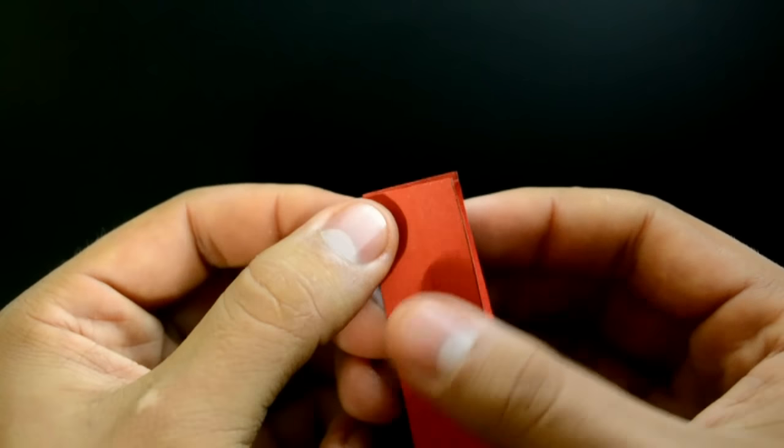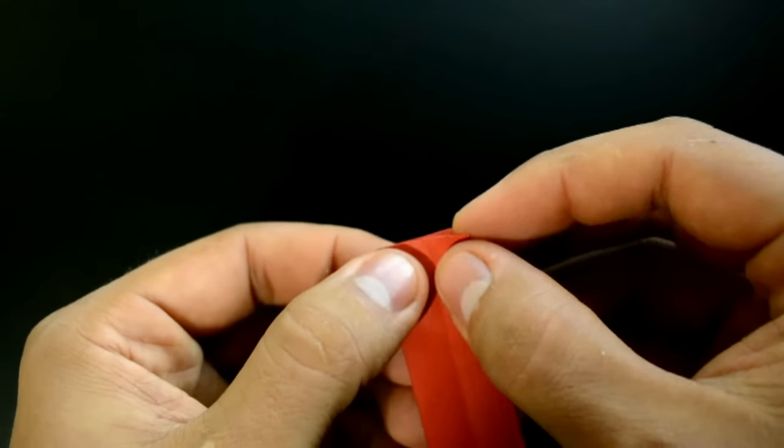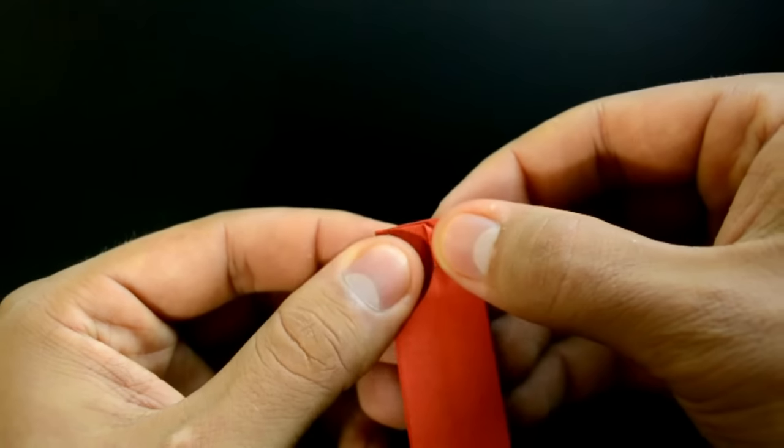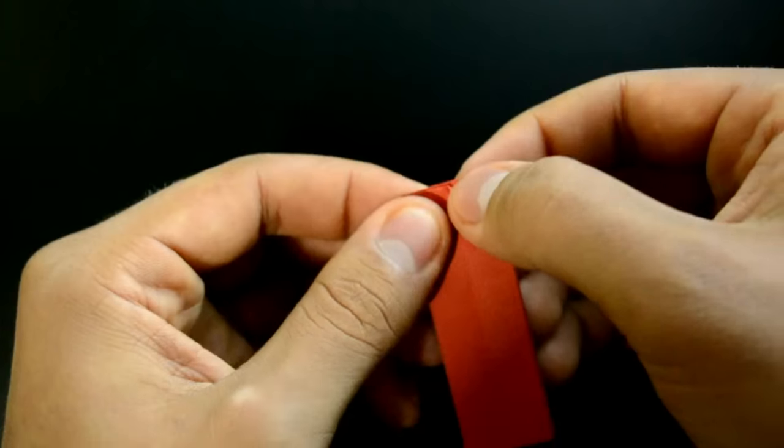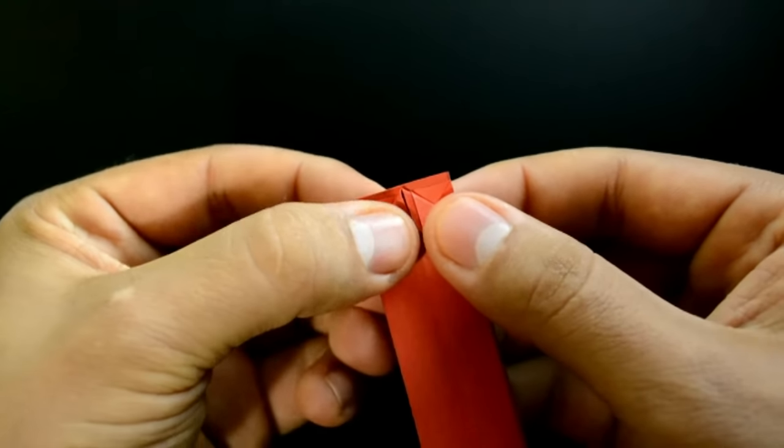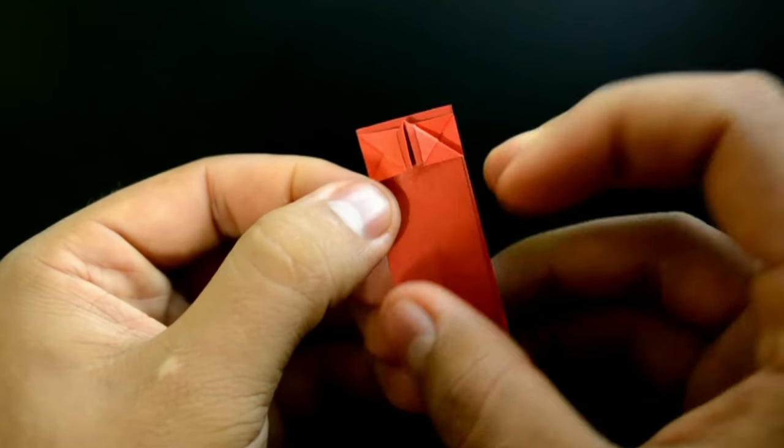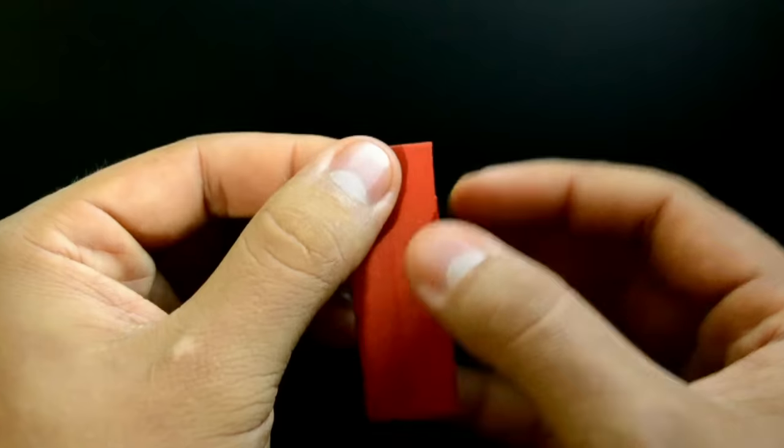Right, with that done, we'll fold this edge here as before. We'll make a new horizontal line, creating a new triangle. Then repeat on the other.